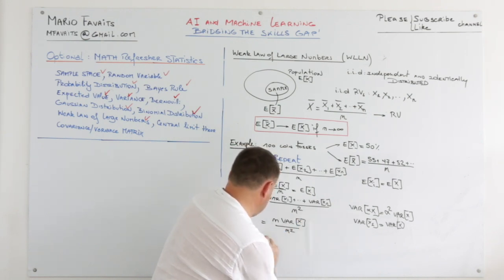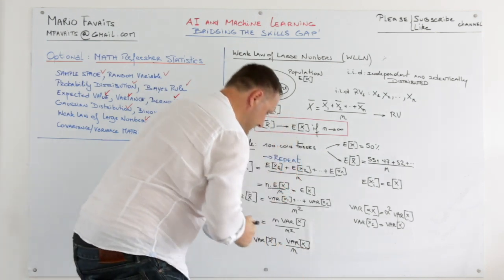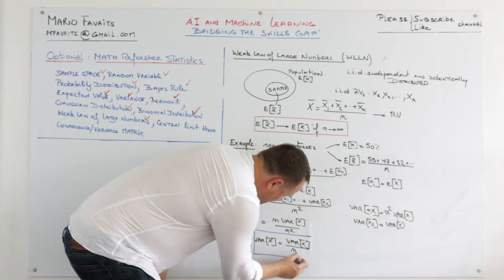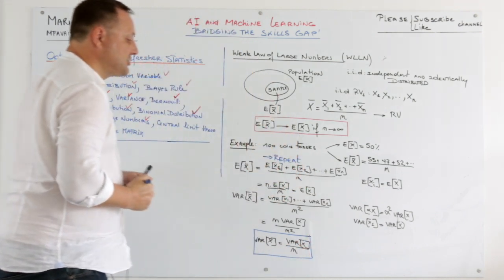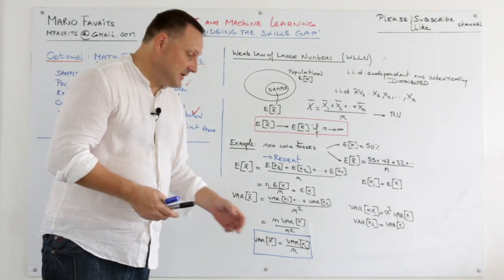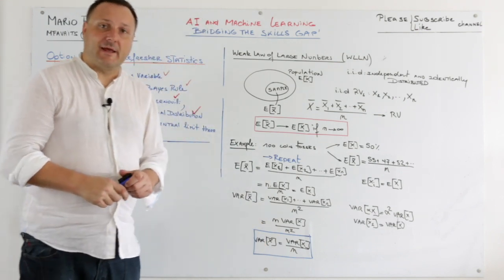So that means that the sample variance equals the variance of the population divided by n. So this shows you also that the more you repeat your experiment, the spread of your data will be reduced by a factor n.